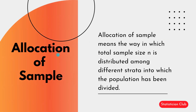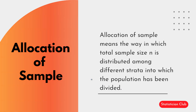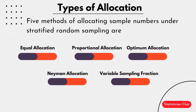What is allocation of sample? Allocation of sample means the way in which total sample size n is distributed among different strata into which the population has been divided. We divide a population of heterogeneous units into groups called strata, and allocating sample to those strata — providing samples to each stratum — is called allocation of sample.